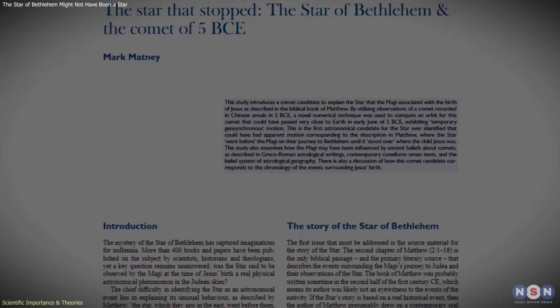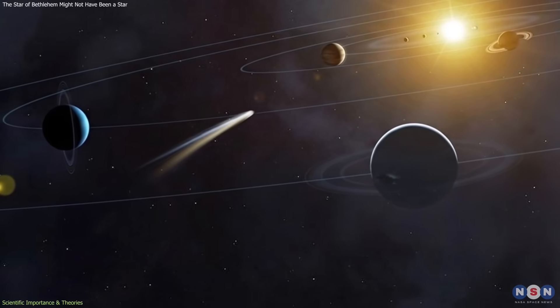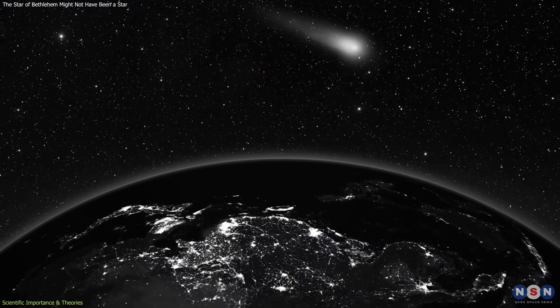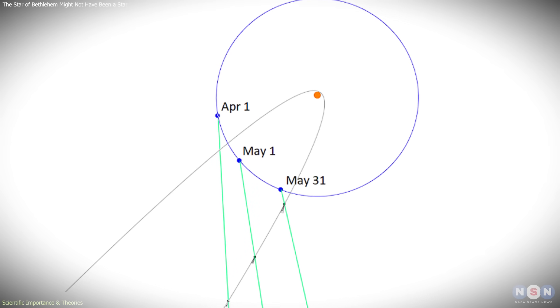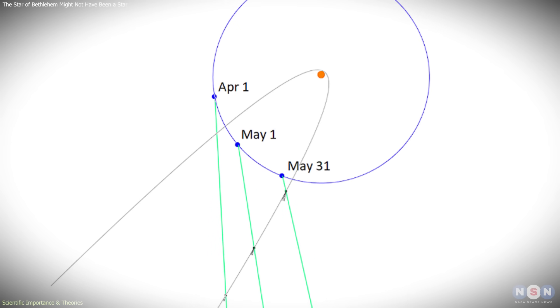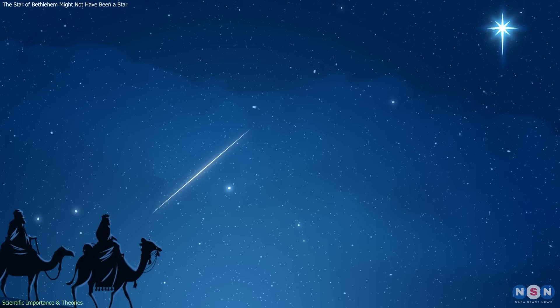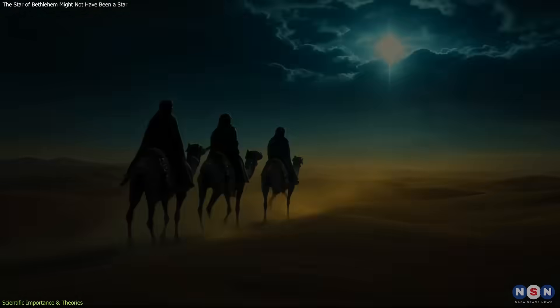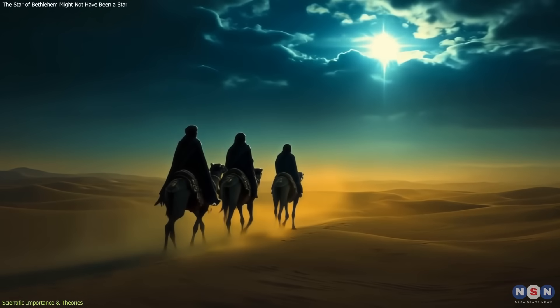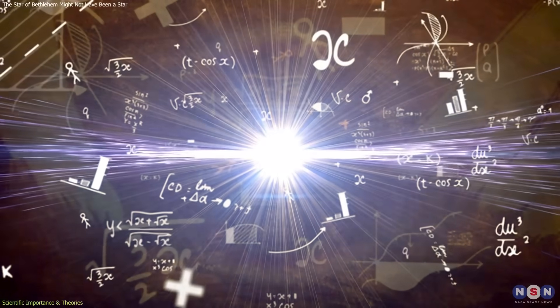The comet hypothesis differs because it directly addresses motion rather than brightness alone. A close approaching comet is one of the few natural objects capable of producing dramatic apparent movement across the sky when viewing geometry and relative motion are taken into account. From a scientific perspective, the study highlights how perception shapes worldly observation. Ancient sky watchers relied on naked-eye viewing and interpreted celestial behavior visually, not mathematically. Under rare circumstances, natural motion can appear intentional or directional, even though it is governed entirely by physics.